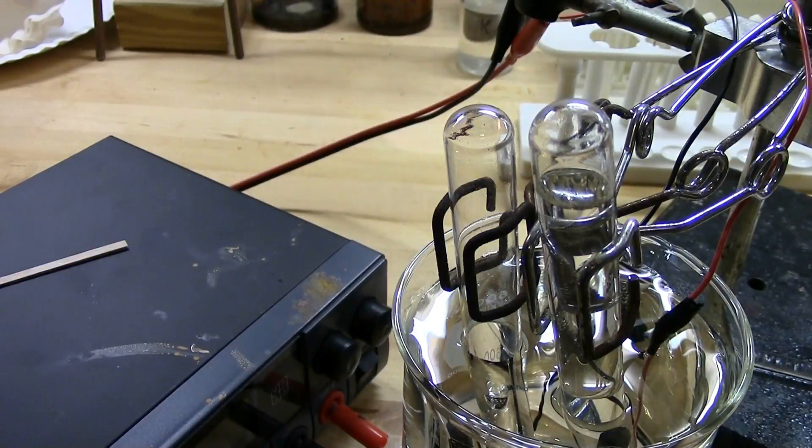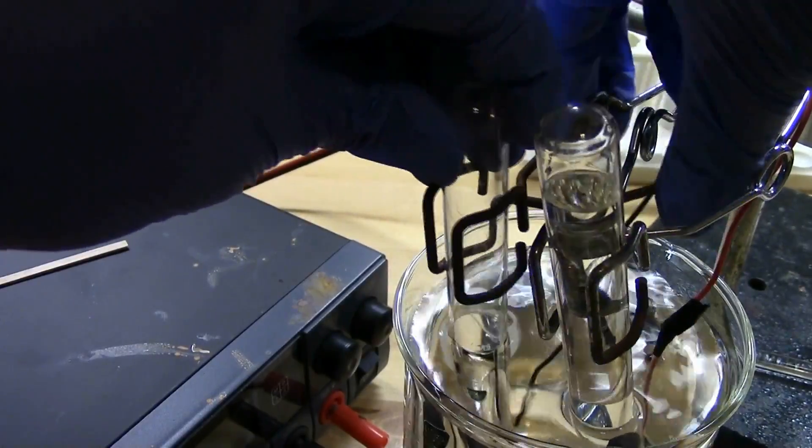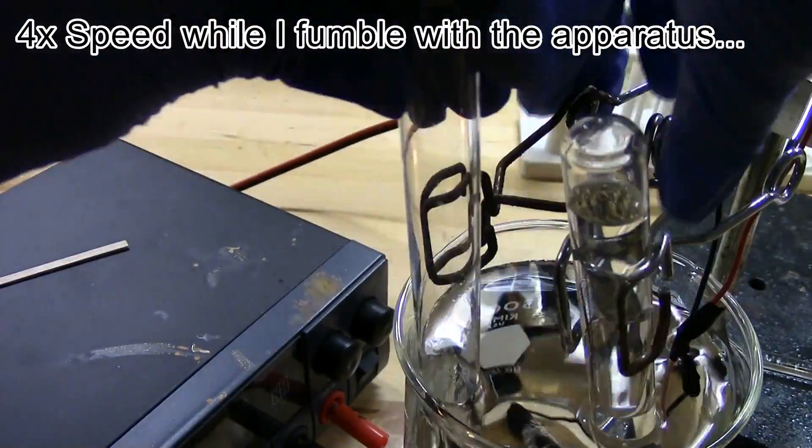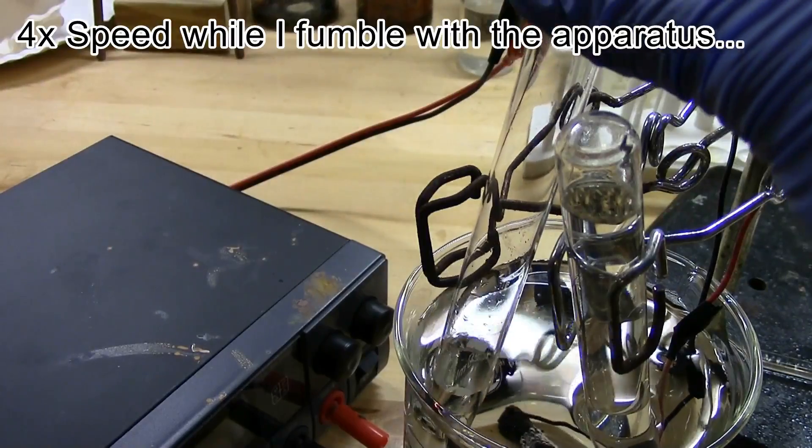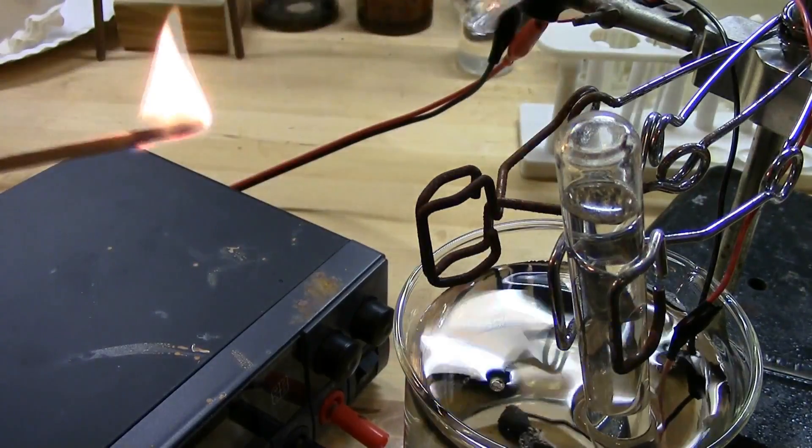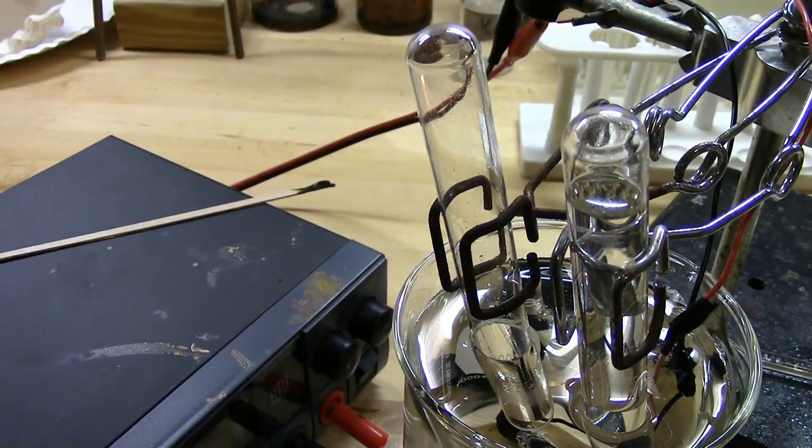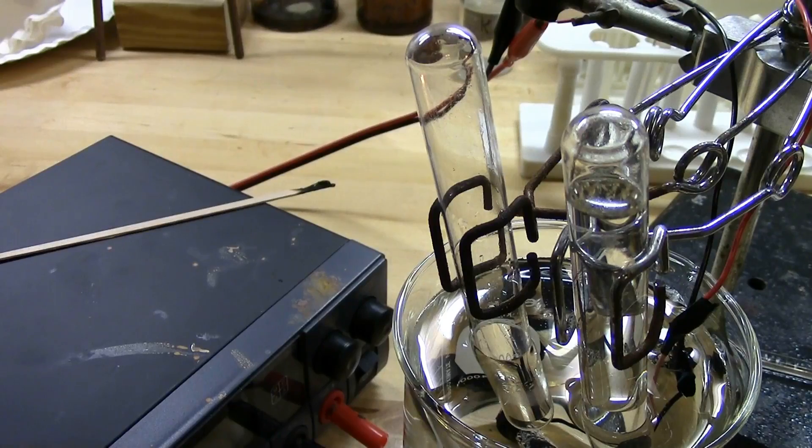Now that we've got our hydrogen ready, let's do another gas test to make sure it is what we think it is. I've got a lit splint - let's test it. It's a good pop. So there you have it. We've successfully extracted hydrogen from both a metal-in-acid reaction and electrolysis of water. Thanks a lot for watching, and we'll see you next time.